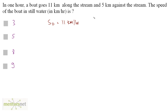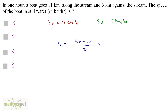And the same boat, if it goes against the stream, it travels 5 kilometers in one hour. So we have been given the upstream speed, that's 5 kilometers per hour. Now we have been asked what is the speed of the boat in still water, and there's a formula for that. Speed of the boat in still water S is equal to the addition of the downstream and upstream speeds divided by 2. So SD plus SU by 2, and that's 11 plus 5 by 2, that's 16 by 2, and that's 8 kilometers per hour.